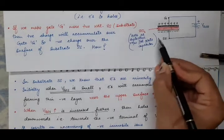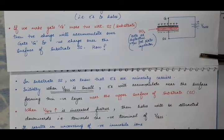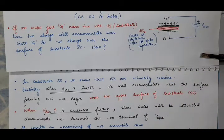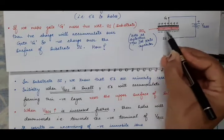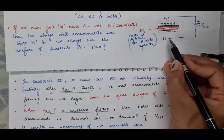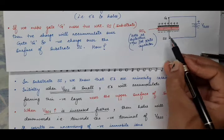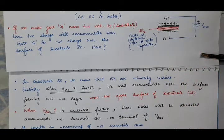So here, the channel will be created between the source and the drain — a negative channel. It will be created because of the accumulation of electrons when VGS was small, and when VGS was large, because of the accumulation of negative immobile ions near the surface, this whole region of P-type substrate will get converted from P-type to N-type. At that time, the conducting channel will be formed between source and drain, and current will start flowing between source and drain.